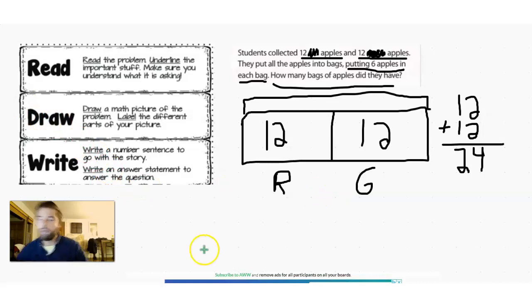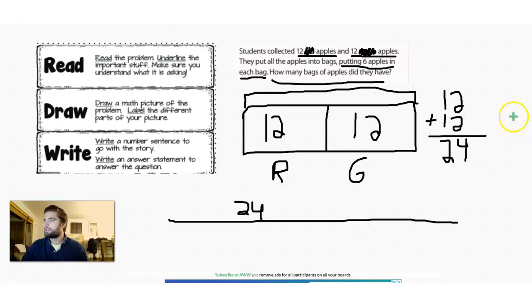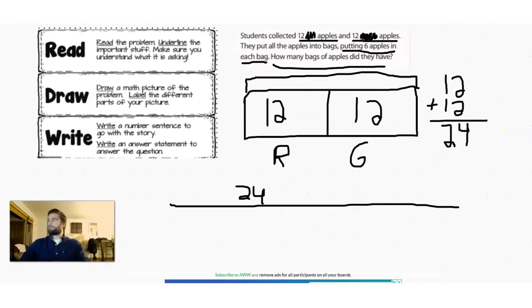24 apples total. Okay. So now that we have 24 apples, we can make another tape diagram. Okay. So we know we'll have 24 here at the top. Now it's saying they put all the apples into bags, and they put six apples in each bag. So let's draw a picture here. And I'm just going to zoom out a little bit so we make sure we don't lose this.